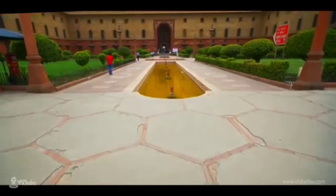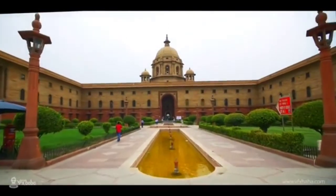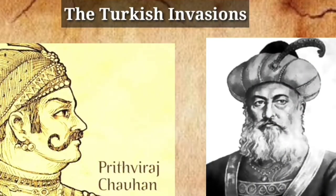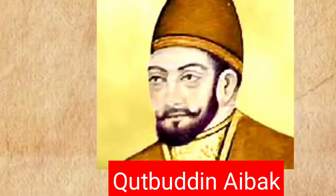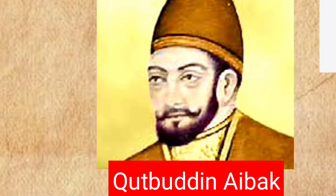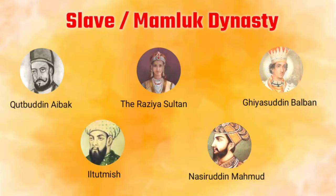By this time, Delhi had flourished and became the main commercial center too. In the previous chapter we saw that Muhammad Gauri invaded India. While returning, he gave all the powers to his slave whose name was Qutbuddin Aibak. Qutbuddin Aibak laid the foundation of the Slave dynasty, also known as the establishment of Turkish rule in Delhi, which is actually a turning point of Indian history.